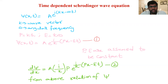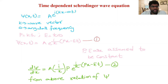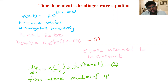Here p and E are assumed to be constant. When we differentiate equation 1 with respect to x, we get A · (i/ħ) · p · e^(i/ħ)(px − Et). So we get p outside, giving us (i/ħ)·p·ψ. This is the second equation.